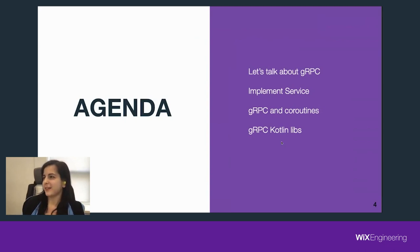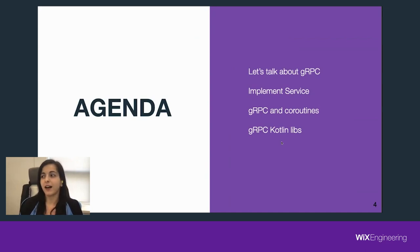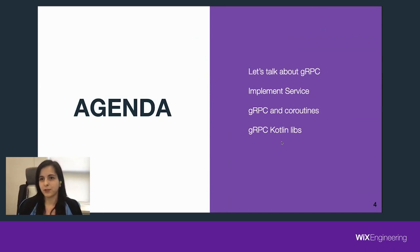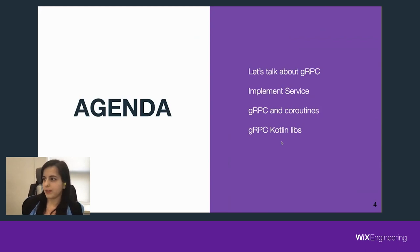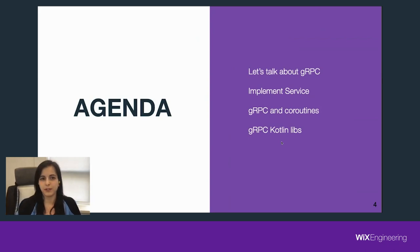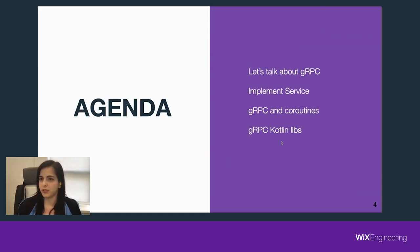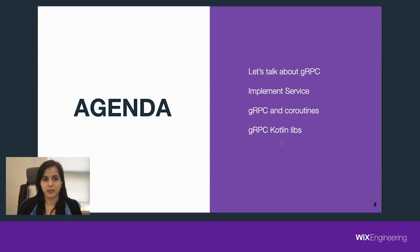Today we'll talk about gRPC a little bit, because as far as I understand, a lot of people still don't know what it is and how to work with it. But if you know, you'll just memorize it. Then we'll implement a very simple service to understand how to use it, and after that we'll talk about how to use gRPC and coroutines together. Then we'll talk about specific gRPC and Kotlin libraries, their state, what can be improved, and what can be added.